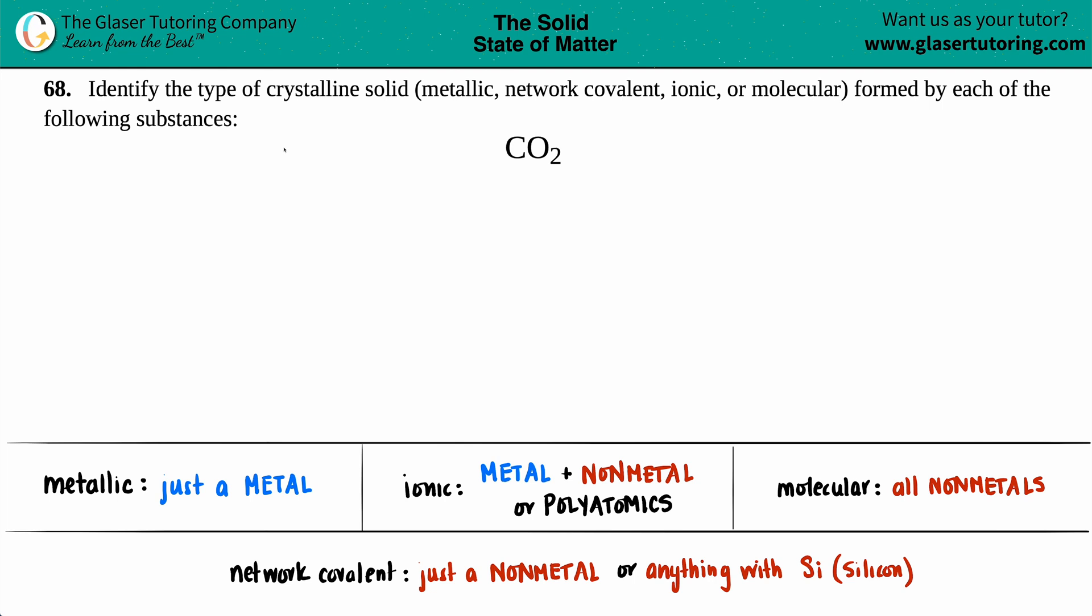Number 68: Identify the type of crystalline solid (metallic, network covalent, ionic, or molecular) formed by each of the following substances. In this case, we have CO₂, which is carbon dioxide.